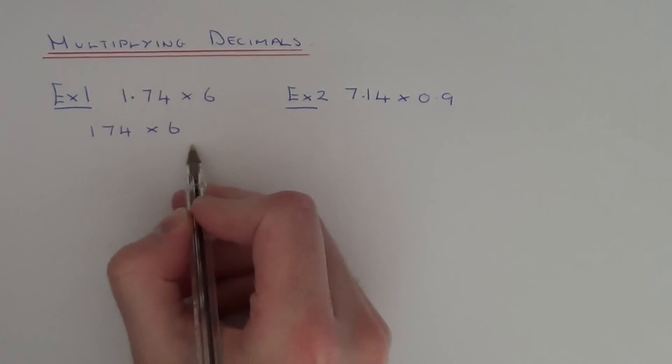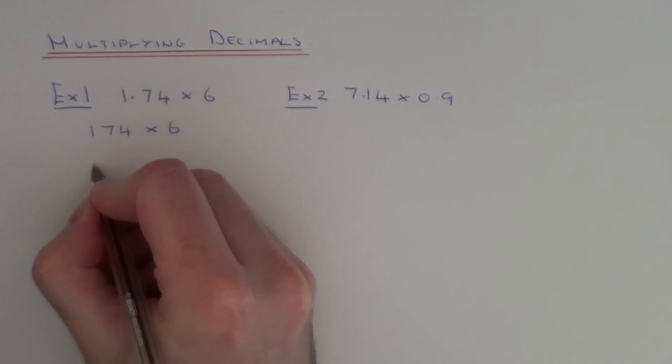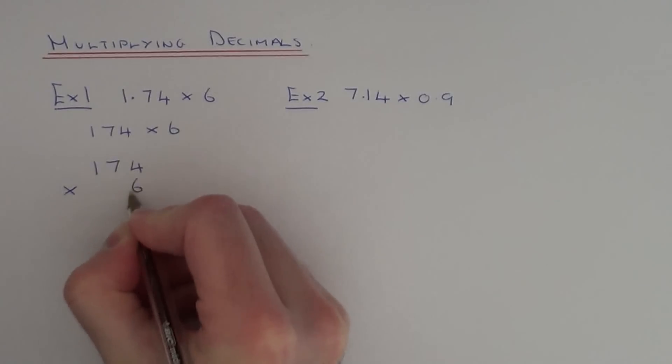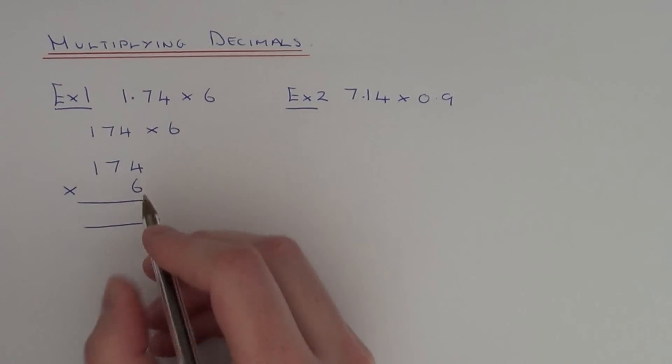If you work this out in your normal method for multiplication, I'm going to choose short multiplication. So if you work out 174 times 6...